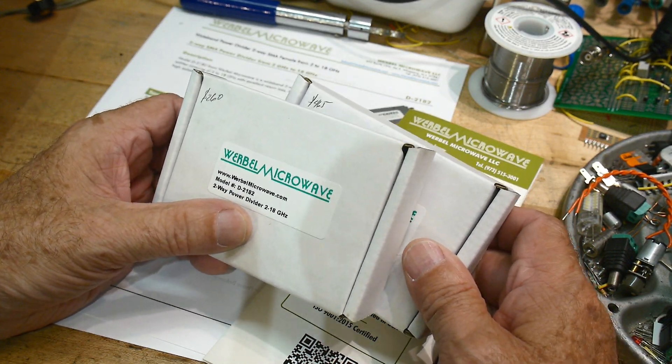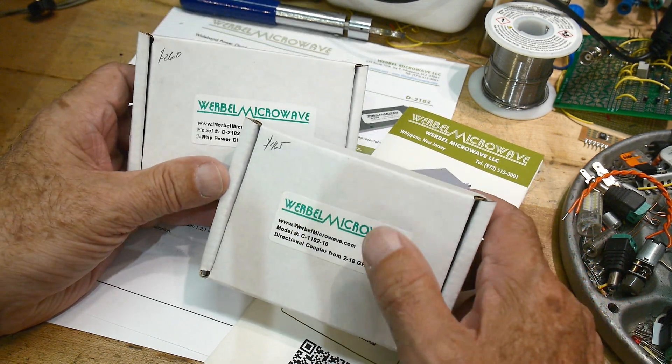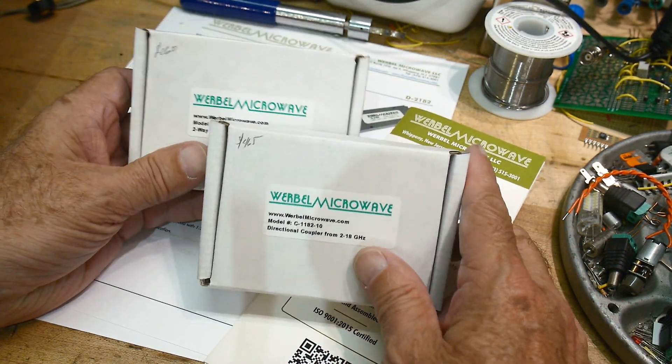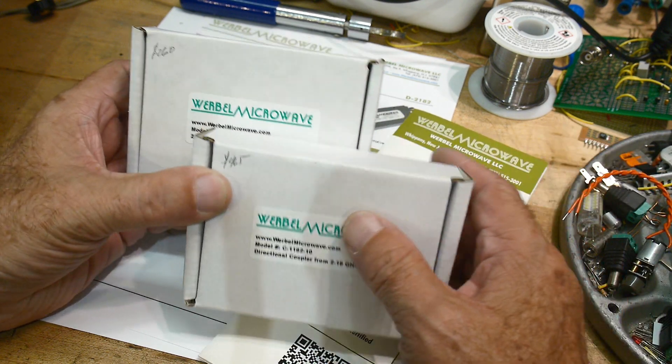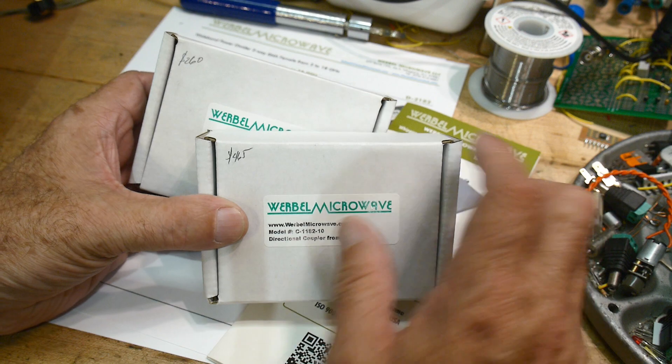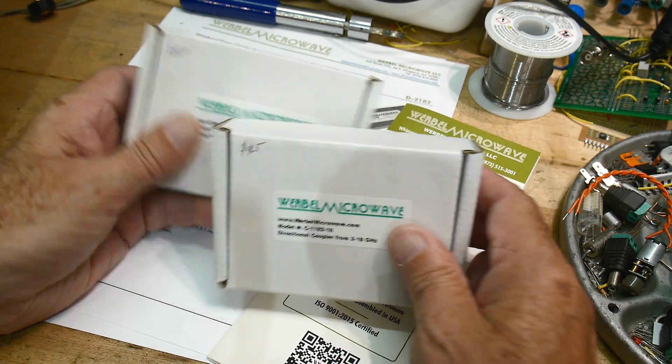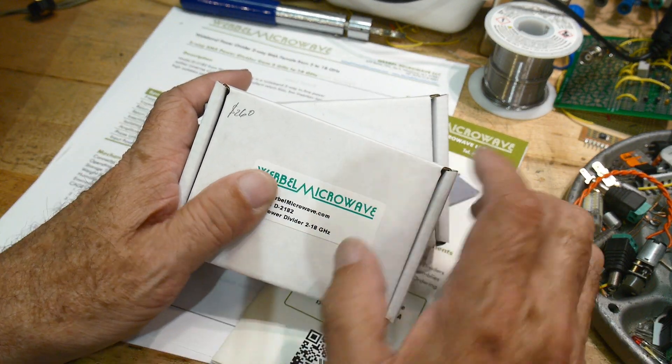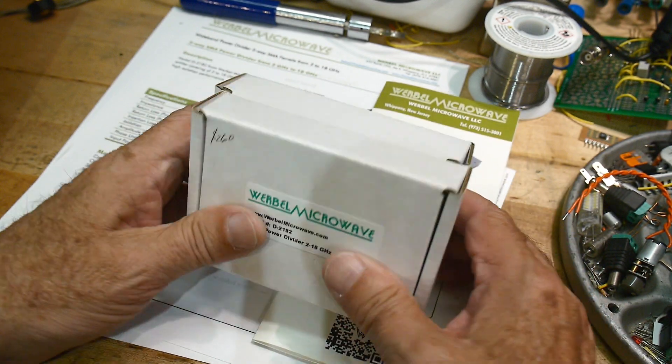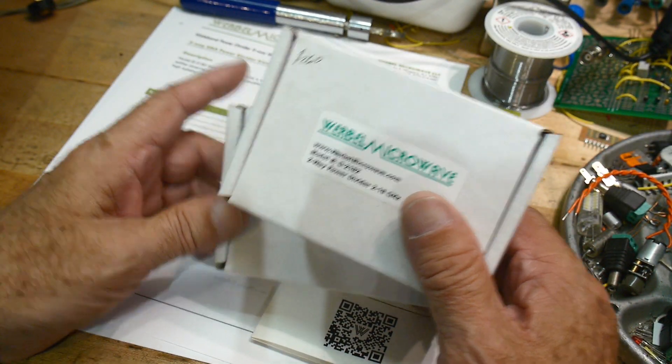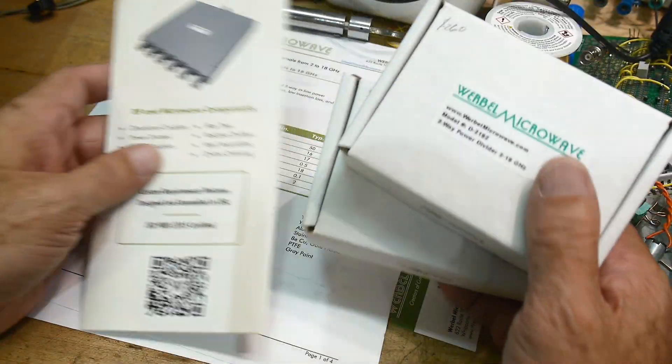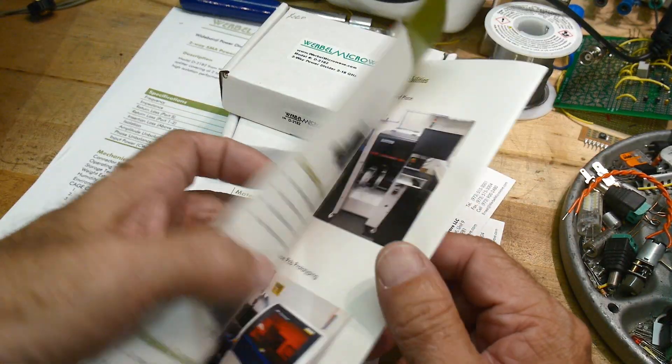Both devices are good from 2 gigahertz to 18 gigahertz. These are expensive things. I looked up the pricing: this one is $465 for the coupler and $260 for the divider. So yeah, over $700 in free gifts, very nice. The company looks like it has quite a few things—different types of couplers and hybrids and things like that.